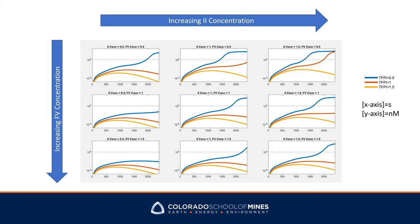Looking at a single row, increasing prothrombin concentration produces acceleration in thrombin generation. Looking at individual columns, decreasing factor V concentration also increases thrombin generation. Therefore, in the top right figure, increasing prothrombin and decreasing factor V by 50% gives the maximum rescue of thrombin generation, corresponding to previous study observations. Importantly, in any case, lowering TFPI level by 50% can drastically rescue thrombin generation even without changes in prothrombin or factor V concentration, meaning that altering TFPI alone is sufficient to rescue thrombin generation in hemophilia A patients.